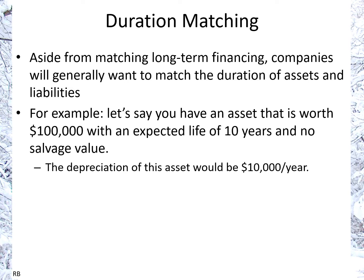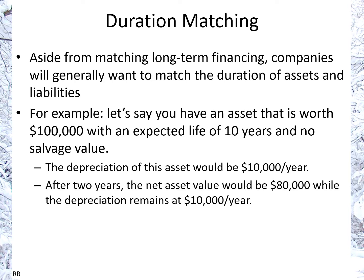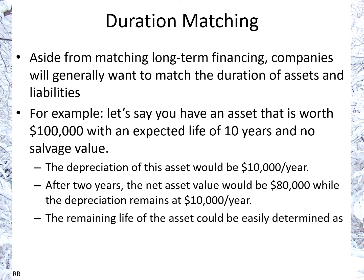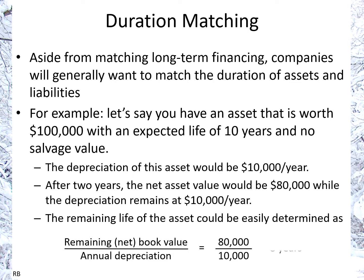The depreciation of this asset is $10,000 per year, so over 10 years it goes to zero. Two years into the asset's life, $20,000 of accumulated depreciation leaves a net asset value of $80,000, with eight years remaining. We can calculate the remaining life by dividing the net asset value ($80,000) by the annual depreciation ($10,000), which gives us eight years.